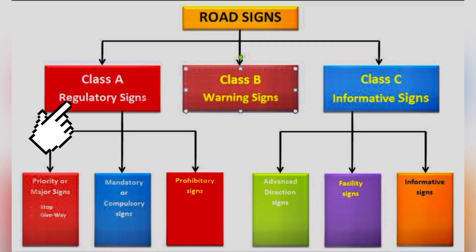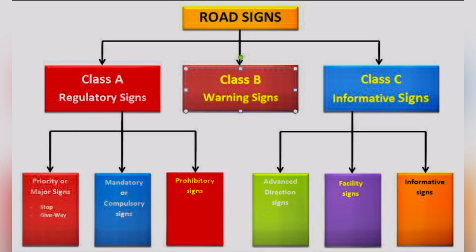We have three classes. Class A: think about any circular-shaped sign that gives a direct order and command to road users — these are the regulatory signs. Any circular-shaped sign, like no entry, falls into this category. The second class is Class B, warning signs, which are triangular-shaped signs with the apex facing upwards.